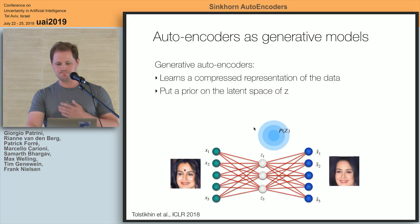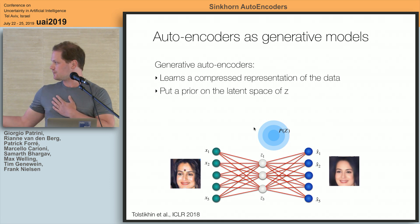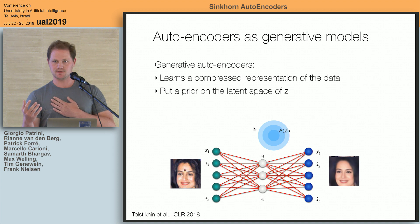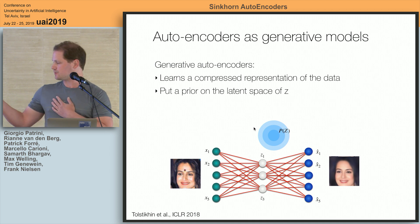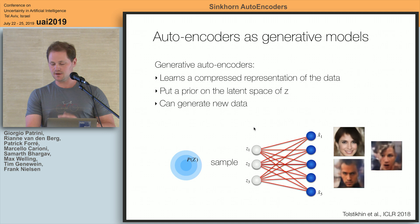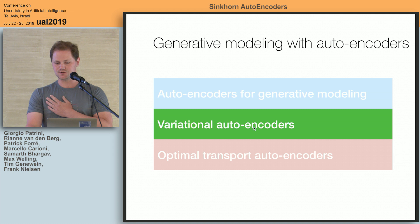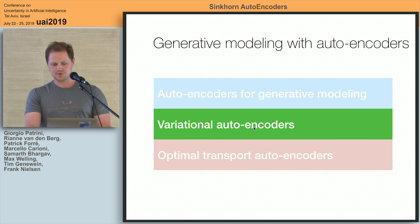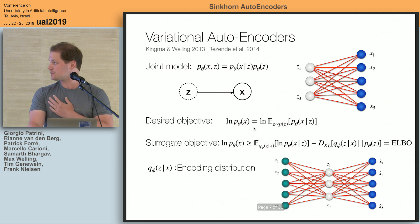We have images, we reconstruct them, and now we want to generate something. What you could do is put a distribution in the latent space, send it through the decoder, and get an image. The problem is you have to do it in a way that's consistent with your data. Here you see some generated images. This was first done with variational autoencoders.